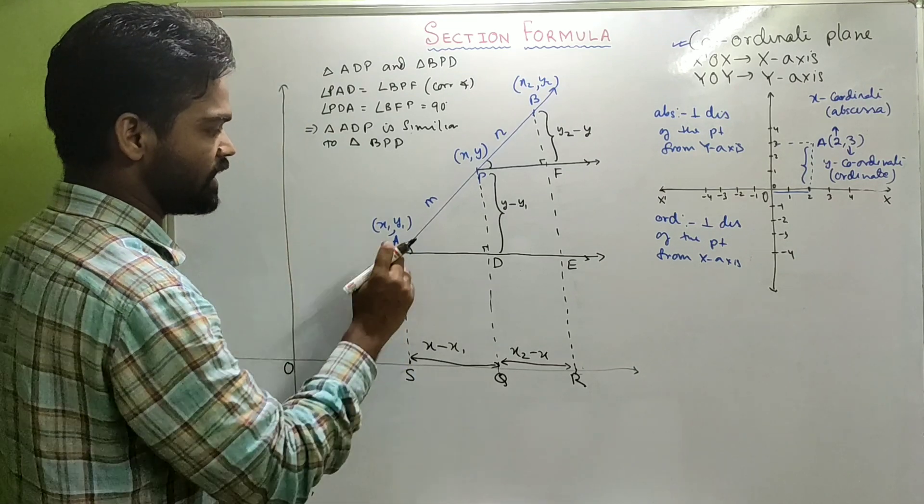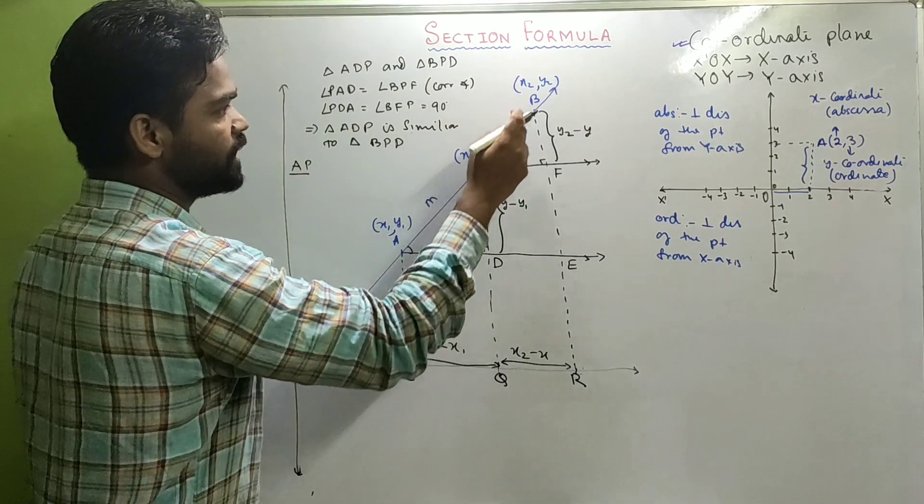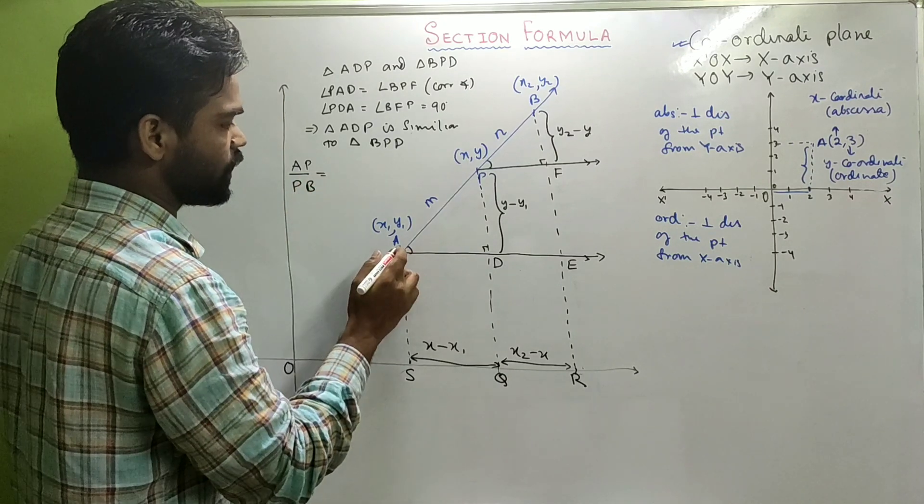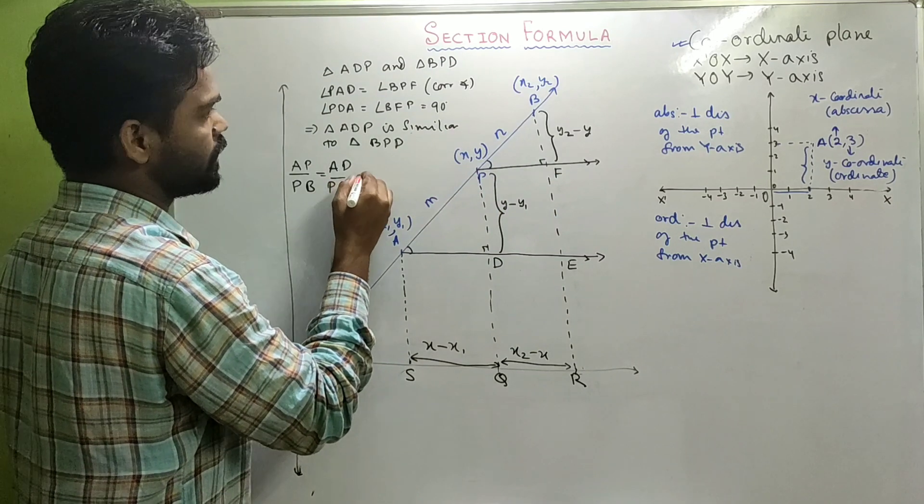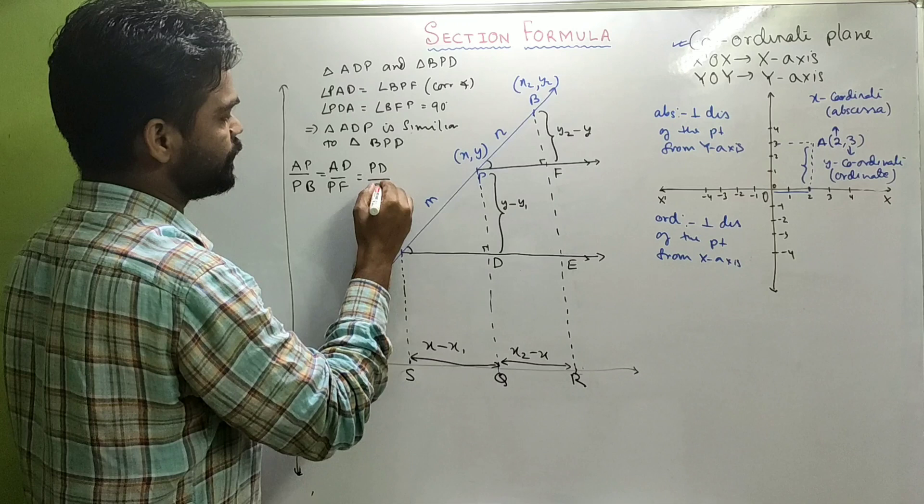Which means can I write AP by BP is equal to AD by PF is equal to PD by BF.